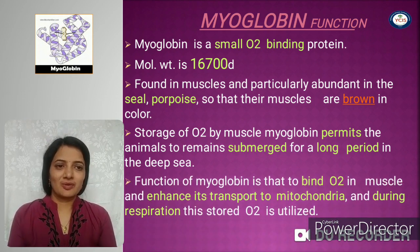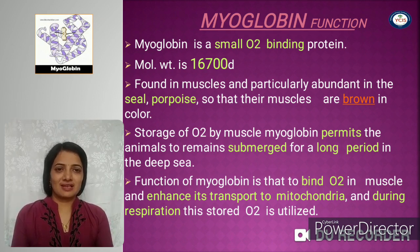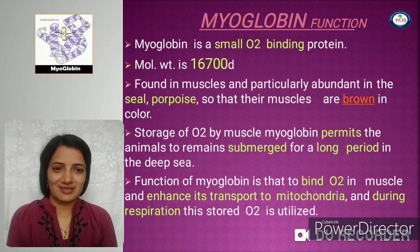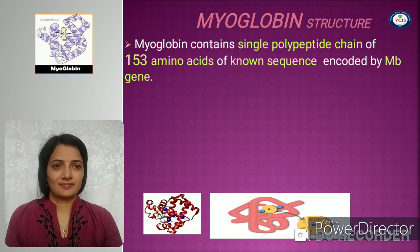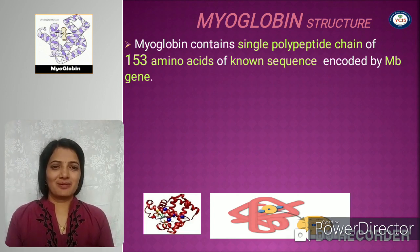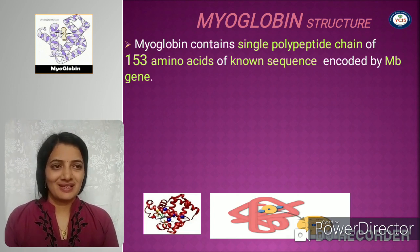The function of myoglobin is to bind with oxygen in muscles and enhance its transport to mitochondria; during respiration, this stored oxygen is utilized. Myoglobin contains a single polypeptide chain of 153 amino acids with a known sequence, encoded by the MB gene.